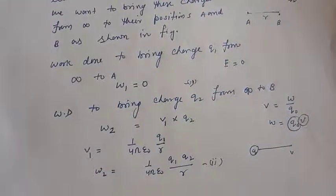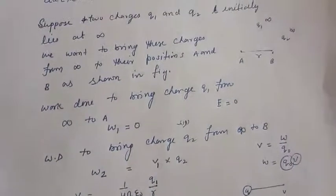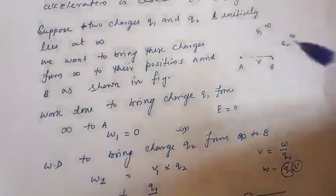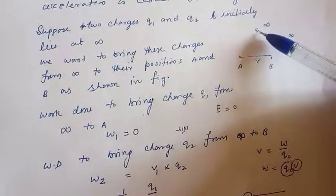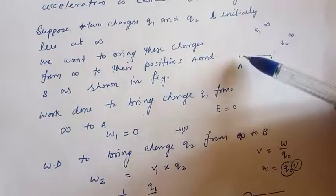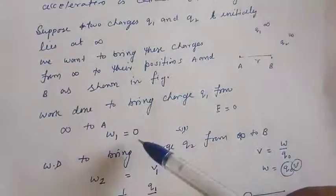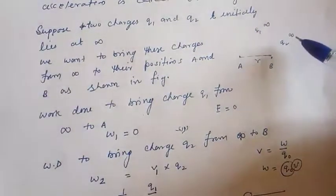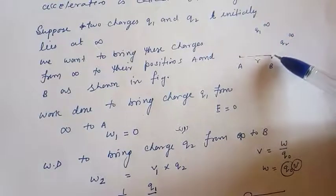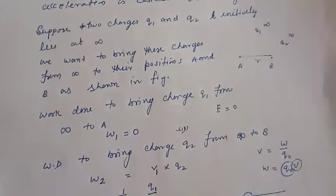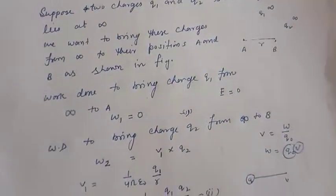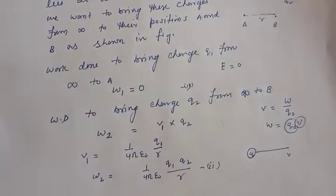So now what we did? Let us take quick revision. First of all we bring charge q1 from infinity to point a, and the work done is 0. In the second case we bring charge q2 from infinity to point b. So work done we have calculated, that is 1 upon 4 pi epsilon 0 q1 q2 upon r.